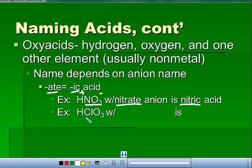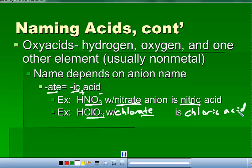ClO3 is the chlorate anion. Since it's ate, it becomes ic, so it's chloric acid. If you look on your green sheet, there are lots of ates: chlorate, perchlorate, bicarbonate, bromate, iodate, chromate, dichromate, tartrate, plus the ones you're memorizing — nitrate, phosphate, sulfate, carbonate. There are a lot of ates. All of those things, if you add hydrogens to them, will become an ic acid.